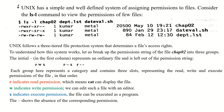A hyphen (-) shows the absence of a corresponding permission. The first group rwx has all three permissions given to the user — readable, writable, and executable by the owner. The third column shows 'kumar' as the owner, and the first permission group applies to kumar.